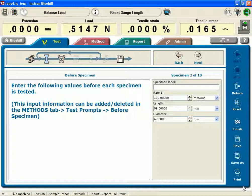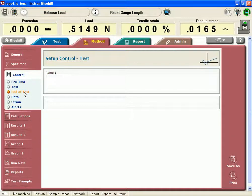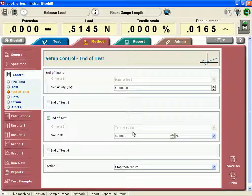So if I go under my method, I have my ramp rate chosen. My end of test is I'm testing a polypropylene rope at 5% strain maximum it's going to go to, and a failure criterion.